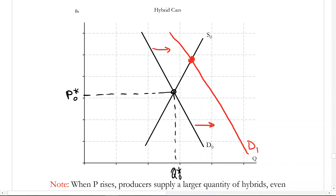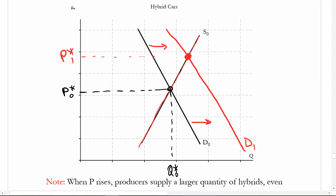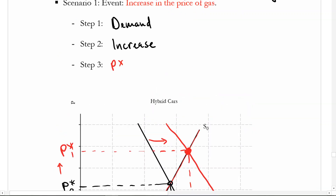We start with P star zero and Q star zero, and we have an increase in demand. An increase in demand is a shift of the entire curve to the right — because a rightward shift is an increase in demand. We find the new intersection between the supply curve and the demand curve. No change in supply, so the supply curve is the same. That gives us P star one and Q star one. So there's an increase in the quantity and an increase in the price. If there's an increase in the price of gas, this would potentially increase the price of hybrid cars and increase the quantity of hybrid cars in the market.